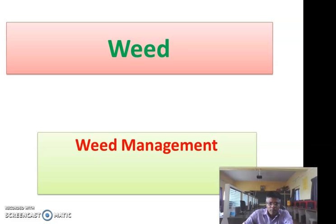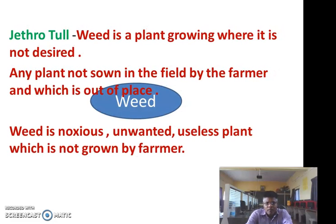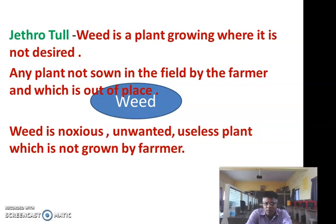We study the definition of weed. Jethro Tull defined: weed is a plant growing where it is not desired. The second definition is that any plant which is not sown in the field by the farmer and is out of place is known as a weed. Also, the weed is the noxious and unwanted useless plant which is not grown by the farmer — it is known as a weed.